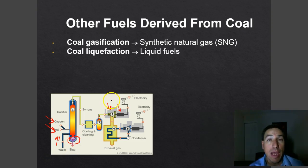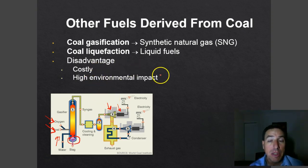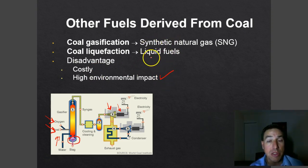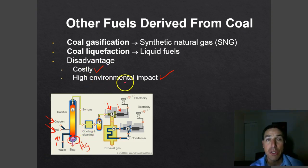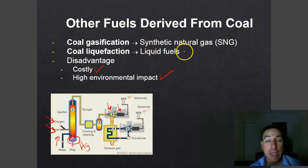We can also do coal liquefaction, where you add certain chemicals to coal to turn it into a liquid fuel. There are disadvantages: high environmental impact, low net energy because more energy is used to produce the fuel, and toxic byproducts that may contain mercury, lead, and other toxins. It is also much more costly than using coal directly. However, if we ever needed to burn coal in an internal combustion engine — like for a car — this route could be used.